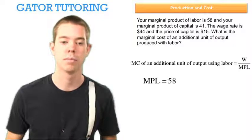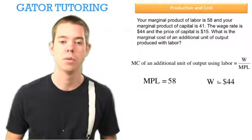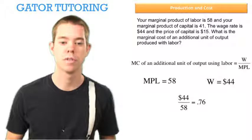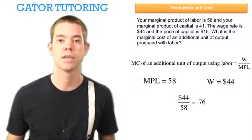When we plug in our numbers, we know that MPL is 58 and W is 44, so we can solve this pretty easily: 0.76.